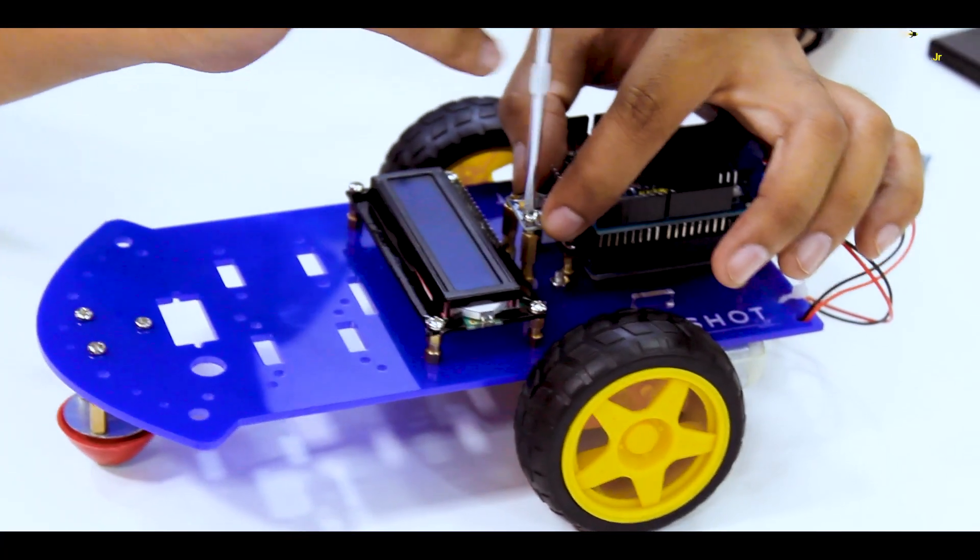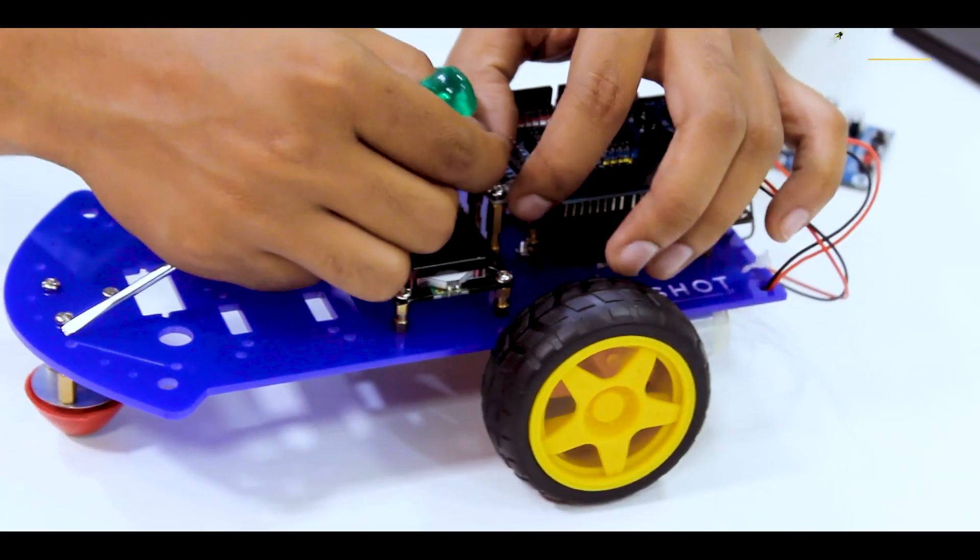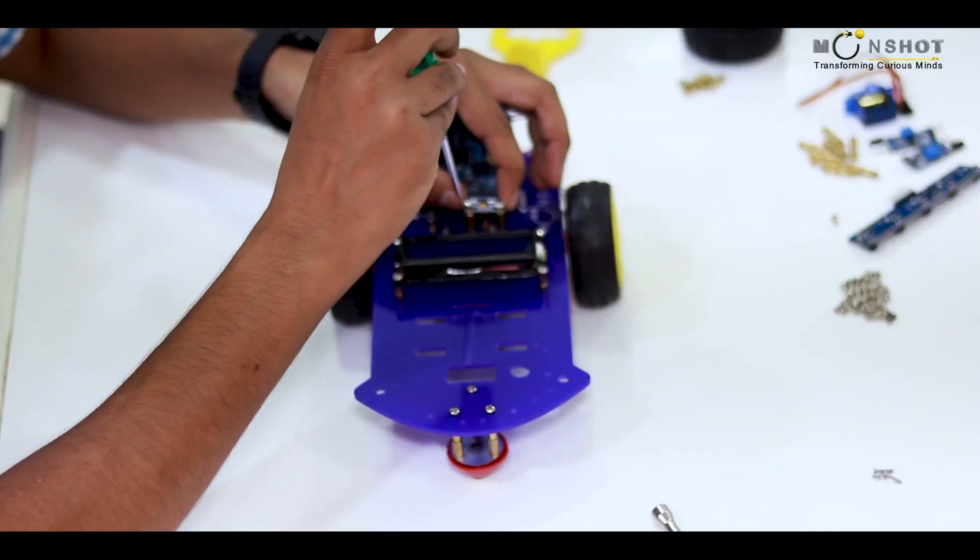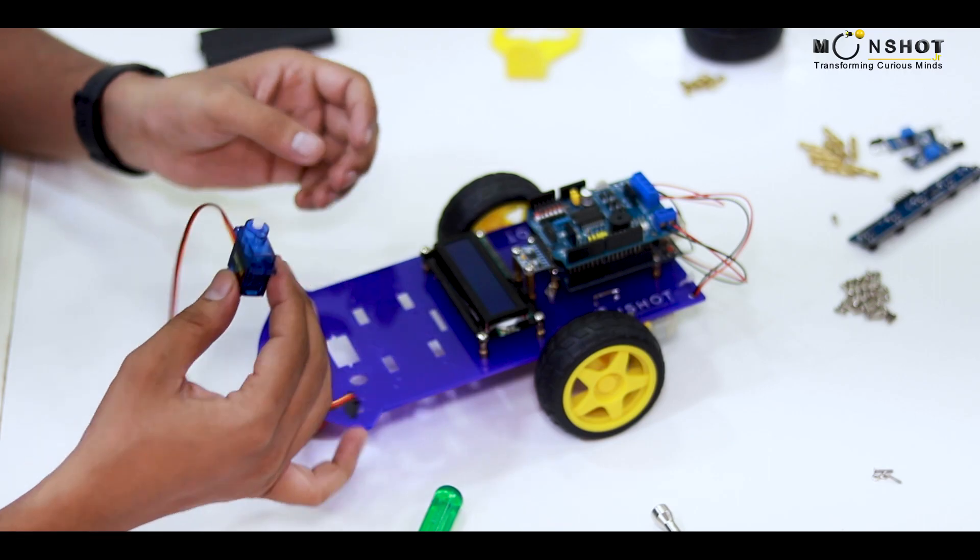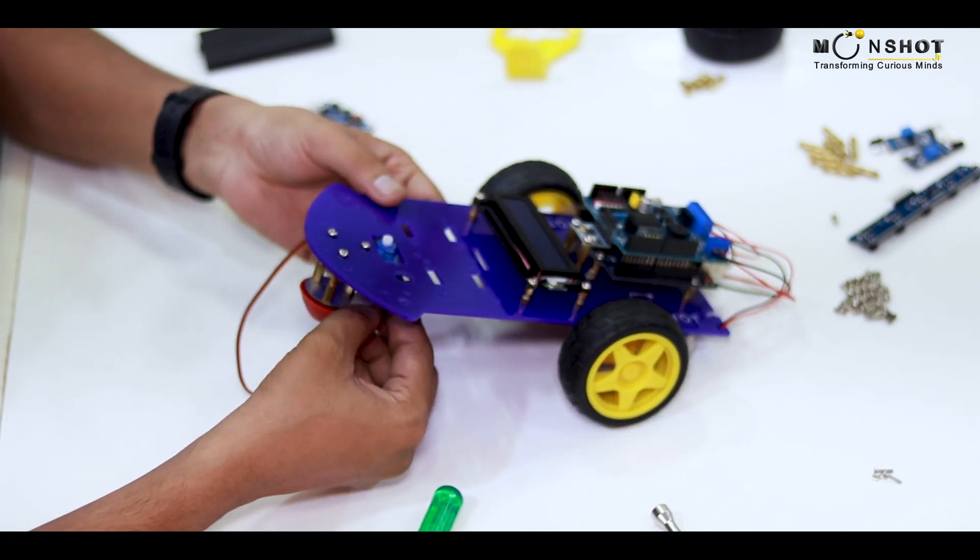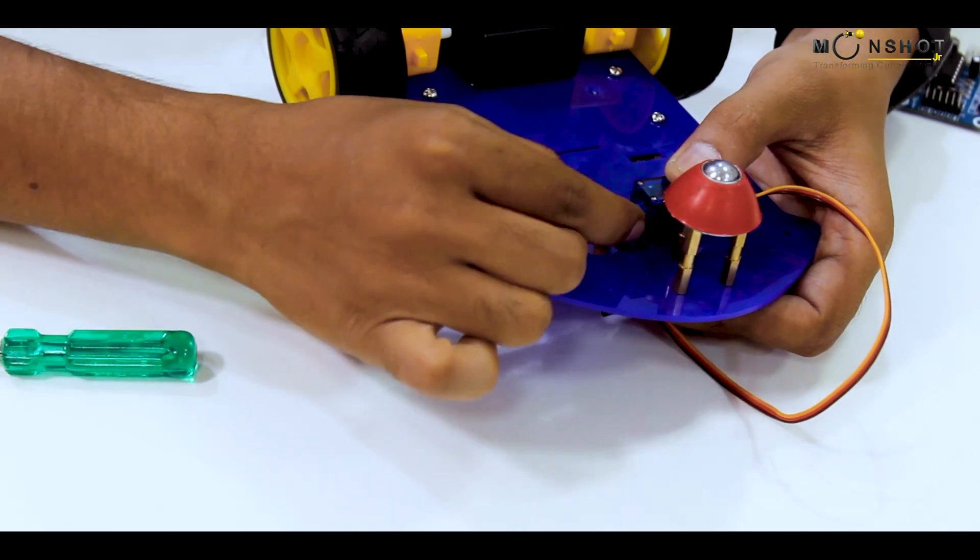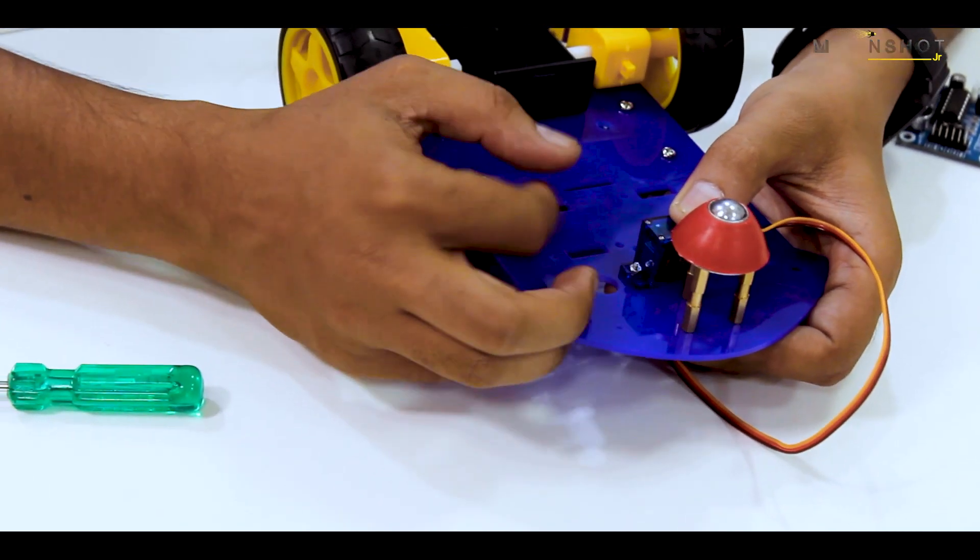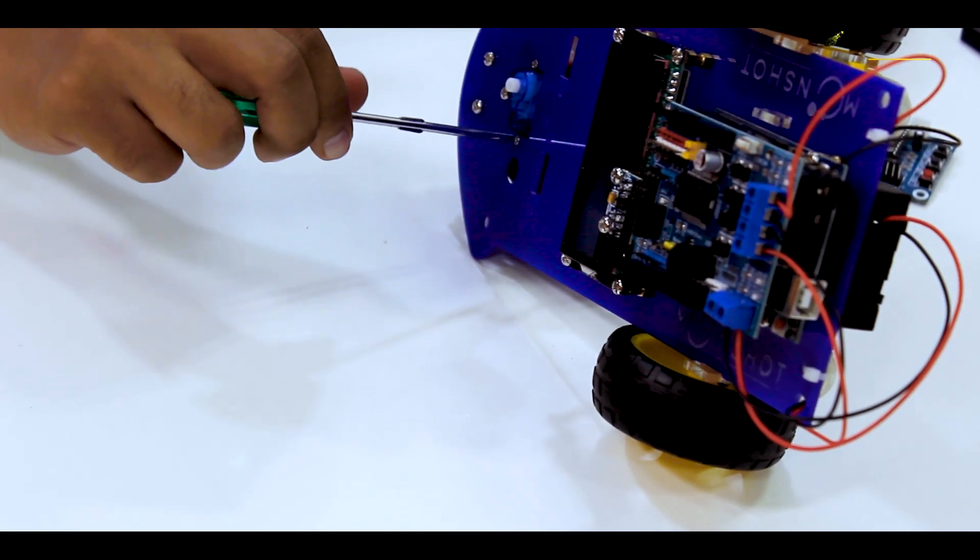So, we have to screw it like this next to the Arduino and motor driver using a 25mm brass hex spacer. This is a servo motor which we are going to place at the bottom on the front of the car and will screw it on the board like this. This will help you rotate the ultrasound sensors so that the robot can make decisions to move left or right.